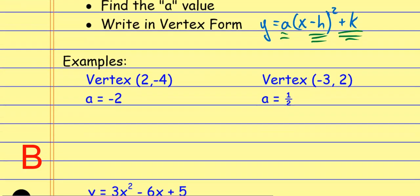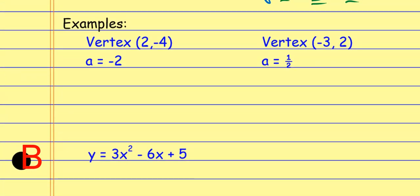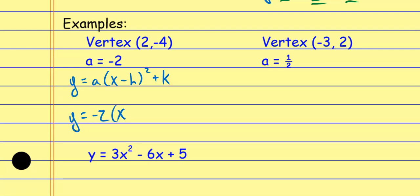For example, if I'm given the vertex and the a value, I want to write the equation in vertex form. Using the format y equals a times x minus h squared plus k, I plug in what I know: the a value is negative 2. Now h is the x value for the vertex — the vertex is hk — but I want the opposite of h. So if h is 2, I do a minus 2. And then the k value is a minus 4, so I write minus 4. That stays exactly the way it's supposed to be.